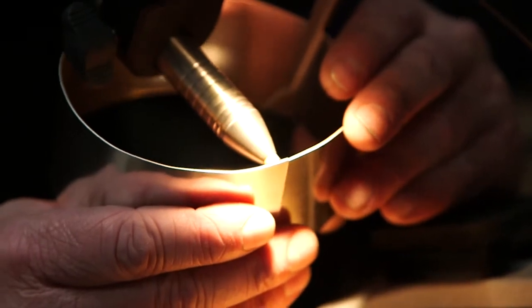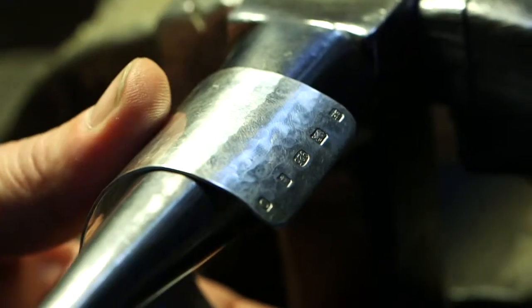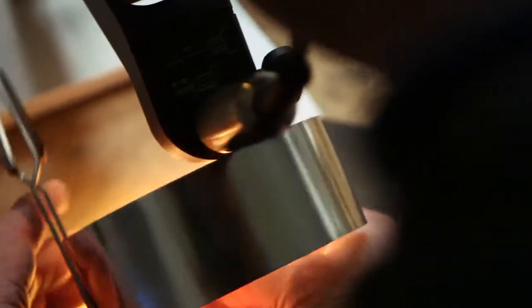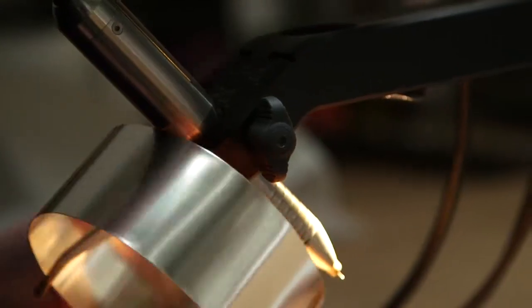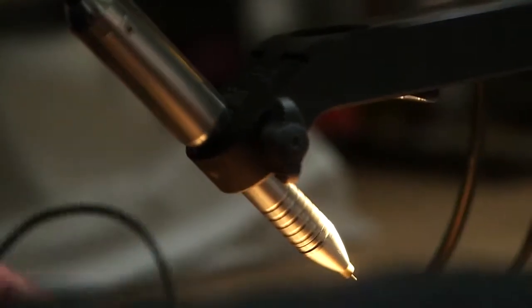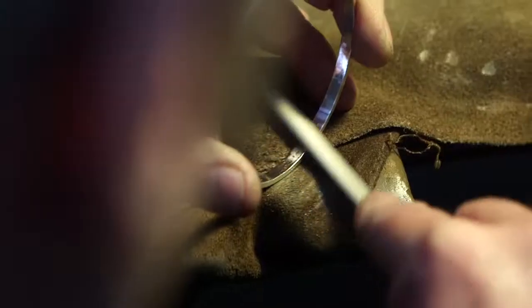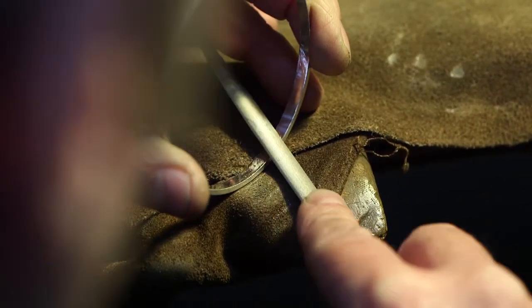The hallmark is the oldest form of consumer protection in the world. It dates back to 1363. Our maker's mark is SH for Stuart Hersey. The silver is struck with the hallmark to guarantee its fineness and purity. It also specifies when and where the piece was made. Our work is marked at the London Assay Office.